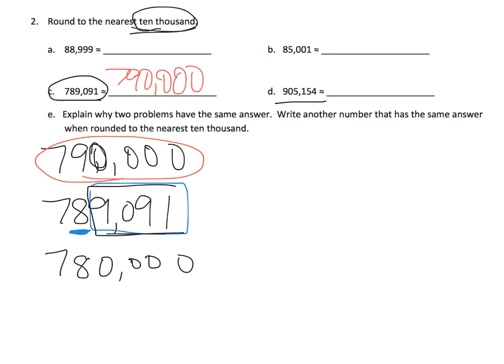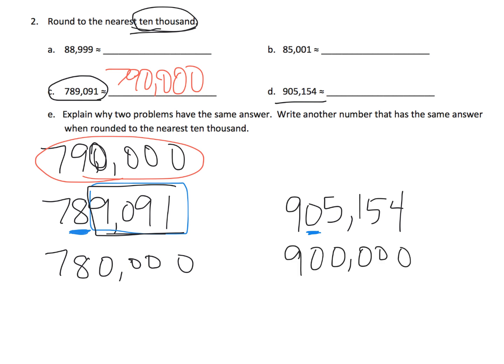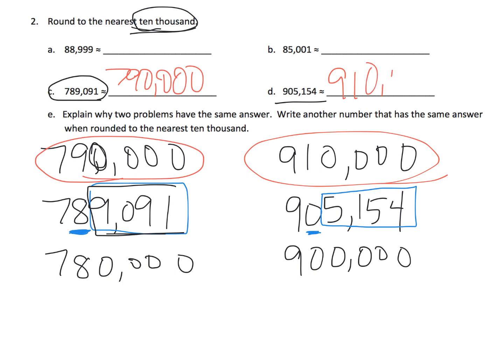Let's do one last one: 905,154. Where's our ten-thousands place? It's right here with that zero. We need to decide: is it going to round down to 900,000, or is it going to round up to 910,000? Students look at the remaining digits and determine whether they're closer to 910,000 or 900,000. In this case, it rounds up to 910,000.